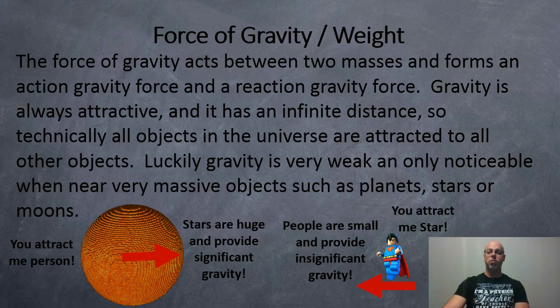The force of gravity acts between two masses and forms an action gravity force and a reaction gravity force. Gravity is always attractive and has an infinite distance for reach. So technically, all objects in the universe are attracted to all other objects in the universe. Luckily, gravity is very weak and only noticeable when near very massive objects, such as planets, stars, or moons.